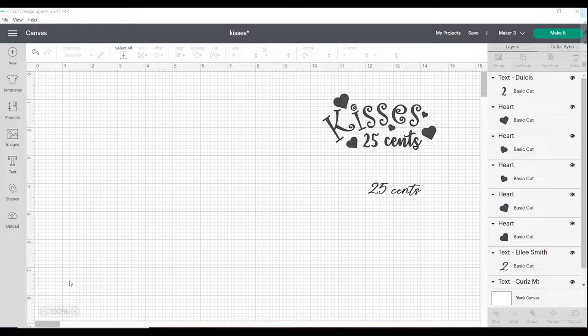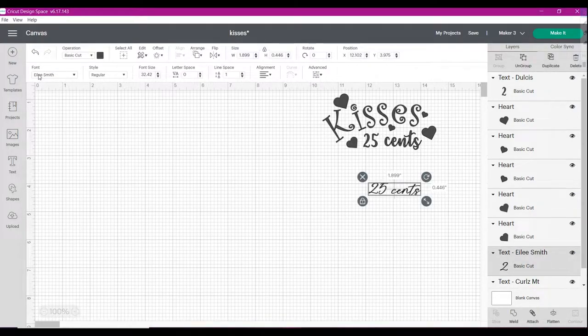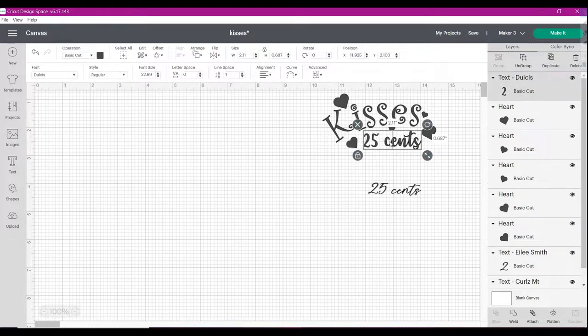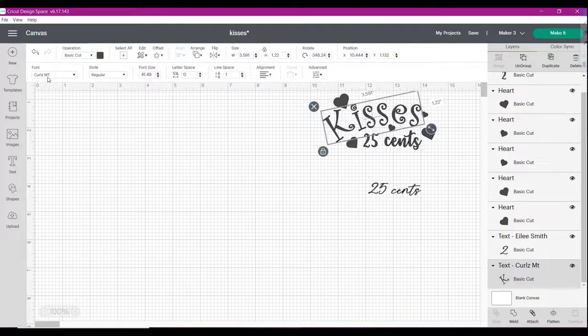For a gumball machine, I'm going to make this little design and I'll show you how I did that. I actually tried two different fonts. This one here is the Smith one, but when I try to cut it out, it just is a little thin, especially for how small my gumball machine is. So I don't think I'm going to be using that one. The fonts I used, I used this one for the 25 cents and this for the kisses.